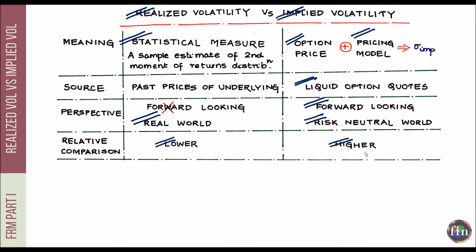The net takeaway is that implied volatility tends to be higher than realized volatility because it incorporates adjustments or premiums that the market maker prices into the option to account for risks associated with volatility.